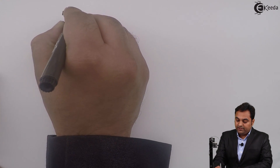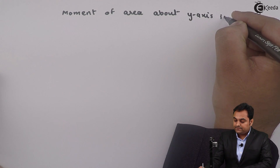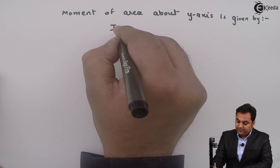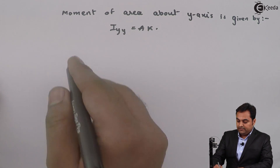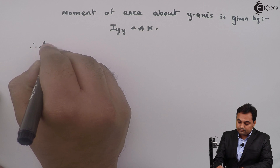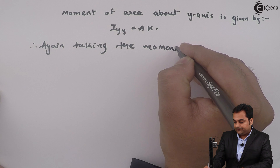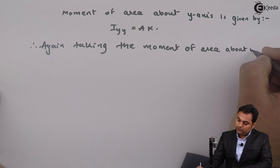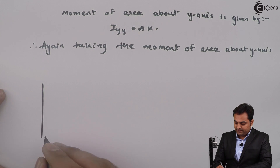Similarly, I can say that the moment of area about the y-axis is given by I-yy equals area into k. Again taking the moment of area about the y-axis, for that I also need a diagram where I can explain it.